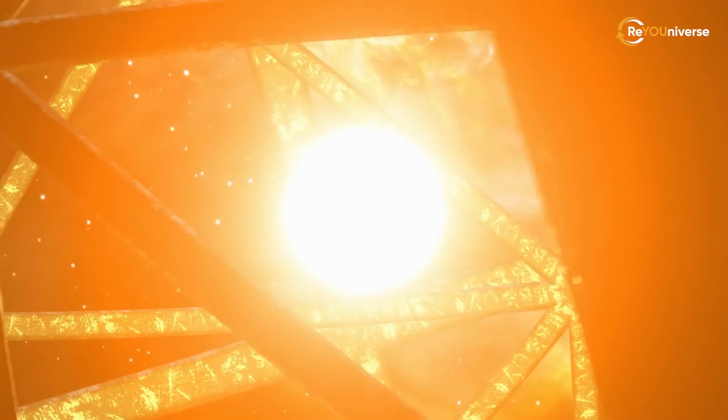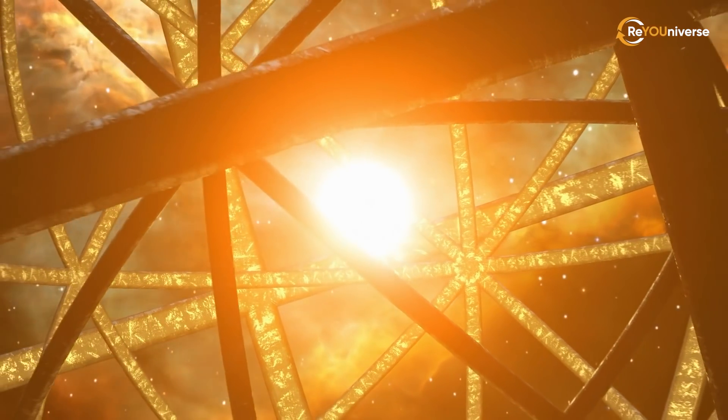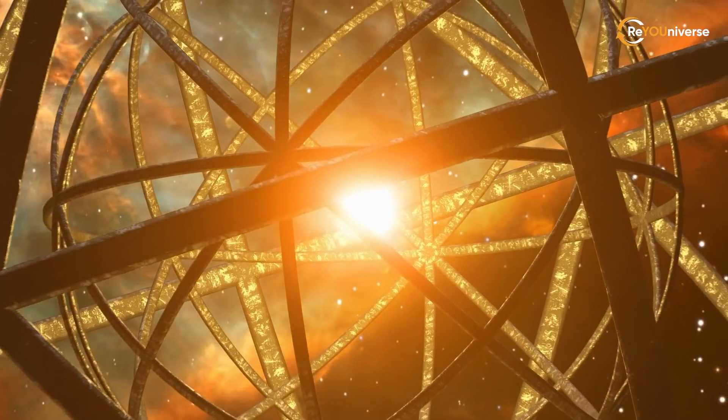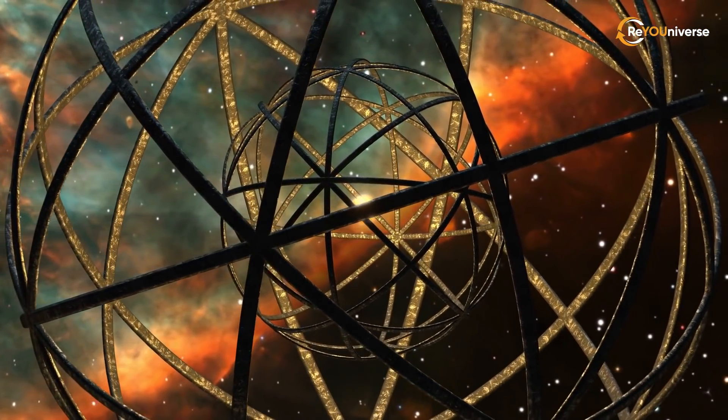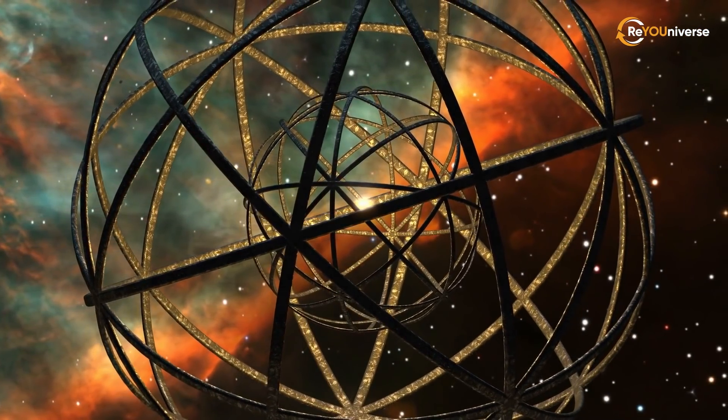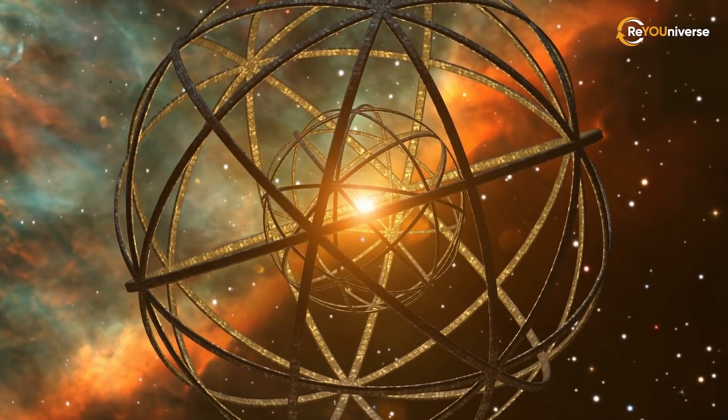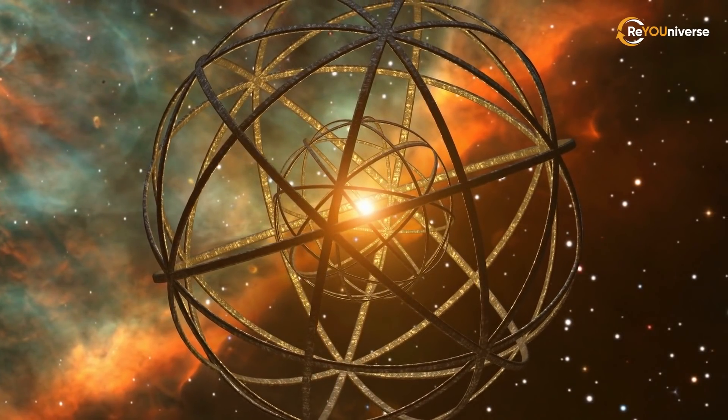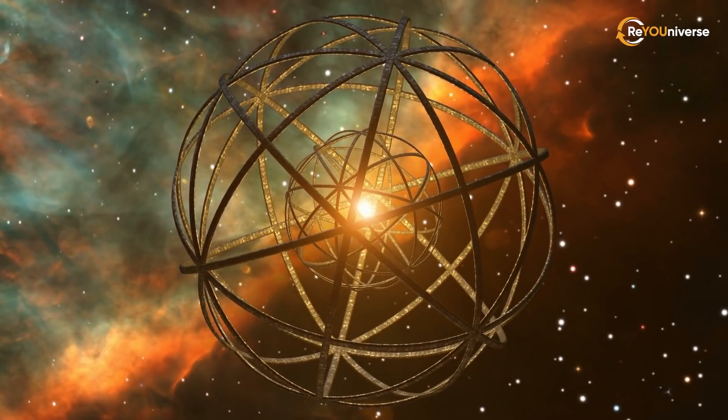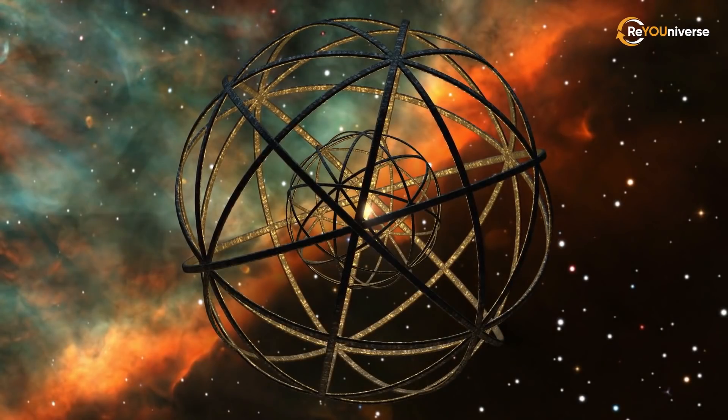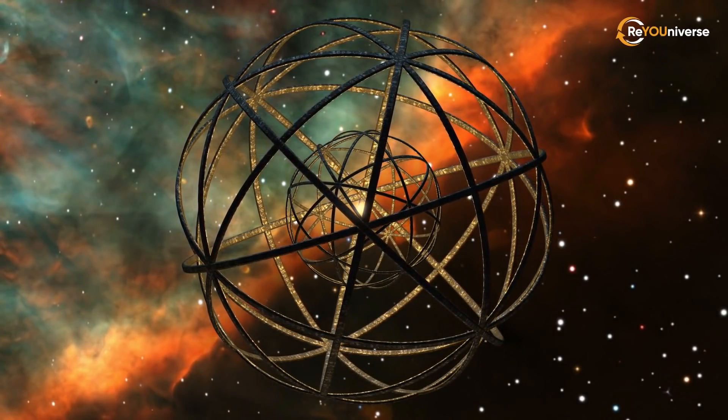In theory, we can look for such super civilizations. The star hidden behind the Dyson sphere is no longer visible. But the sphere itself heats up and throws heat back into space. Instead of a star, we could see a sphere dimly glowing in heat, i.e. infrared light, which is strikingly different from the natural infrared radiation emitted by stars or planets.